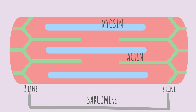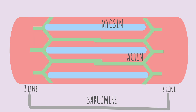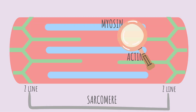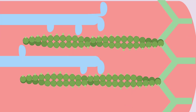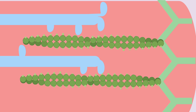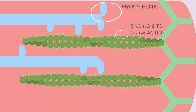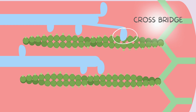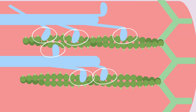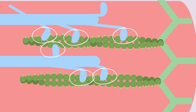During a muscle contraction, the actin filaments move closer and closer towards the midline and the myosin filaments move closer and closer towards the Z line. This movement or interaction between the actin and the myosin is only visible if we take a closer look. Notice that there are these projections coming out of the myosin. These are called myosin heads. And on the actin, there are these little boxes on every bead. These are called binding sites. When a muscle is ready to contract, the myosin head will attach itself to the binding site, forming a crossbridge. All these myosin heads are going to latch onto the binding sites and form crossbridges. Once attached, the myosin will pull the actin towards the midline. This motion is called a power stroke.